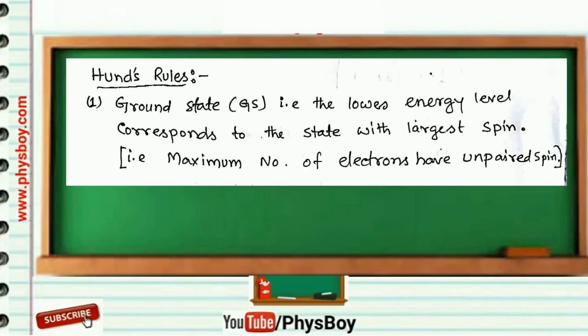You have to solve this problem by using Hund's rules. Rule number one: ground state, that is the lowest energy level, corresponds to the state with largest spin, that is maximum number of electrons have unpaired spin.